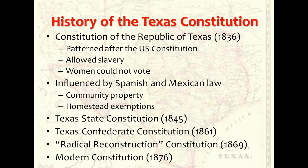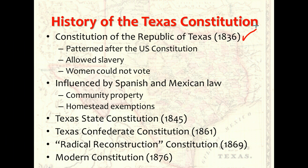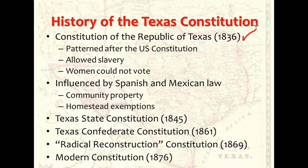History of the Texas Constitution. The Constitution of the Republic of Texas was written in 1836 by a convention of 59 delegates, and the people of the republic ratified the constitution soon after. Much of the document was patterned after the constitution of the United States and those of several other states. The first Texas constitution separated governmental powers into the legislative, executive, and judicial branches, and it created checks and balances among the branches.